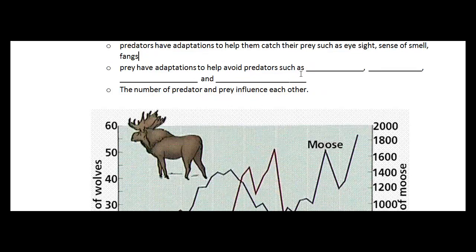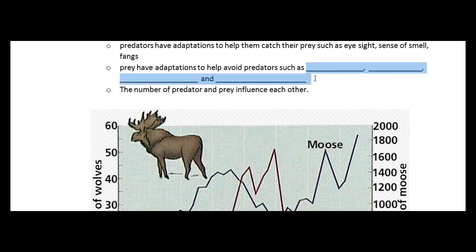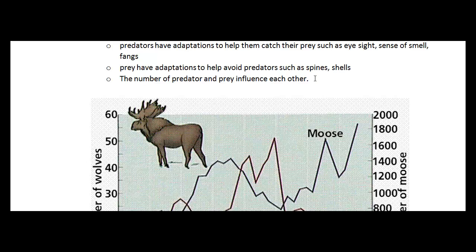Prey also have adaptations to help them avoid their predators. And things that they might have are things like spines, shells, camouflage, and mimicry. So mimicry, they're able to mimic other animals.